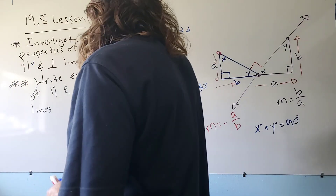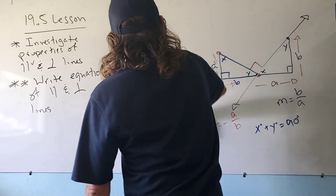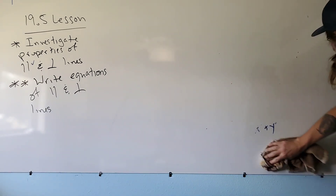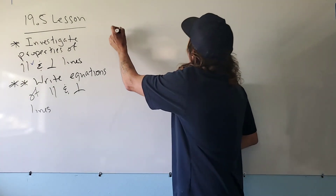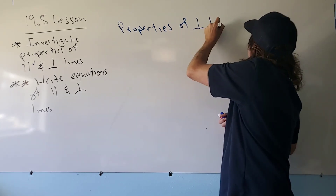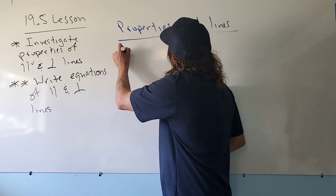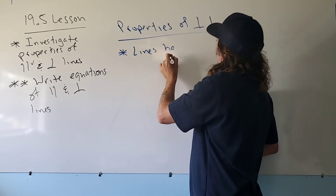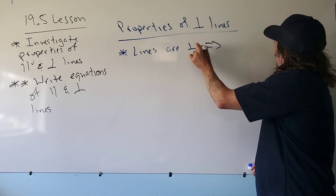Let's write down the property of perpendicular lines. You could call this a theorem because we can actually argue it — it's not something we simply accept as true. Lines are perpendicular if and only if their slopes are opposite reciprocals.